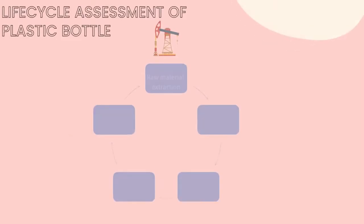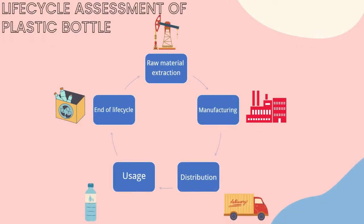The life cycle of plastic bottles contains five processes which are raw material extraction, manufacturing, distribution, usage, and end-of-life cycle. We will go through all processes one by one.